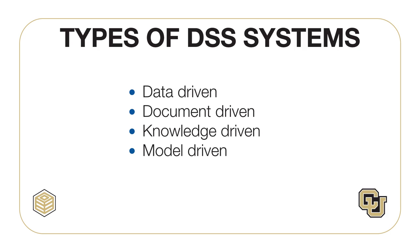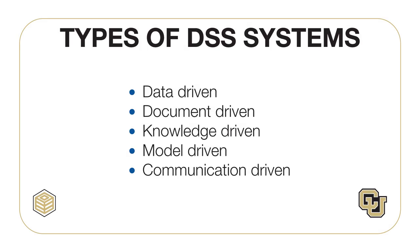Data-driven and model-driven DSS have evolved into executive information systems, which are used to access news, stock prices, and information about competitors, customers, key performance indicators, and internal operations via dashboards and scorecards. And finally, a communication-driven DSS includes group support systems for collaboration and group work. Any audio and video conferencing tool that supports meetings, design, collaboration, and even supply chain management falls into this category.